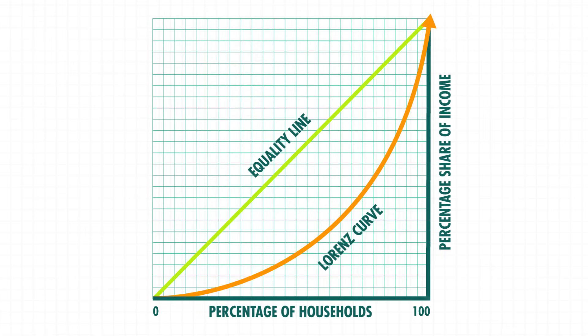From the Lorenz curve, we can calculate the most commonly used measure of income inequality: the Gini index. Without jumping into too much of the math, it's basically the size of the gap between the equal distribution of income and the actual distribution. Zero represents complete equality and 100 represents complete inequality. You might be surprised to learn the U.S. doesn't have the highest income inequality, but it does have the highest among Western industrialized nations. The U.K. has the highest in the EU.